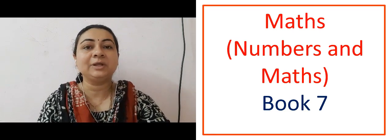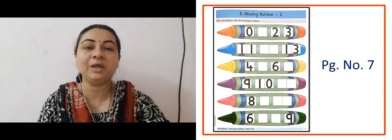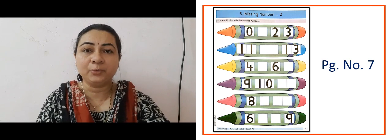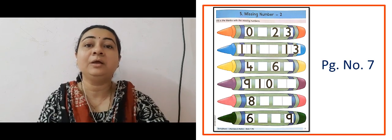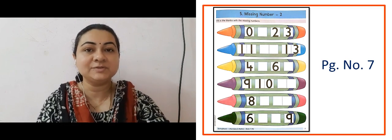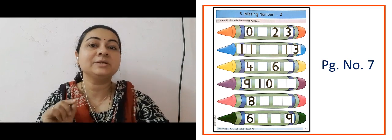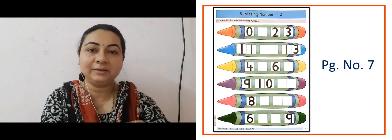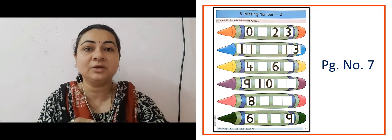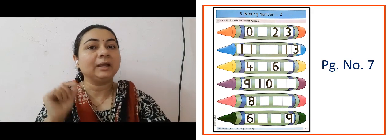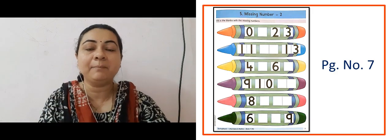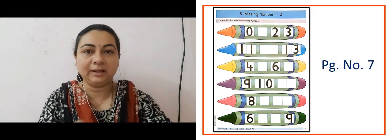The next slide is showing us our first page, that is page number 7. Here the topic name is Missing Number 2. What we did here is we filled the blanks that were empty. For example, the first crayon is 0, after that blank, 2 and 3. So what do we need to fill? Number 1 — that is the missing number. So here we have to fill in the missing numbers in the blanks.